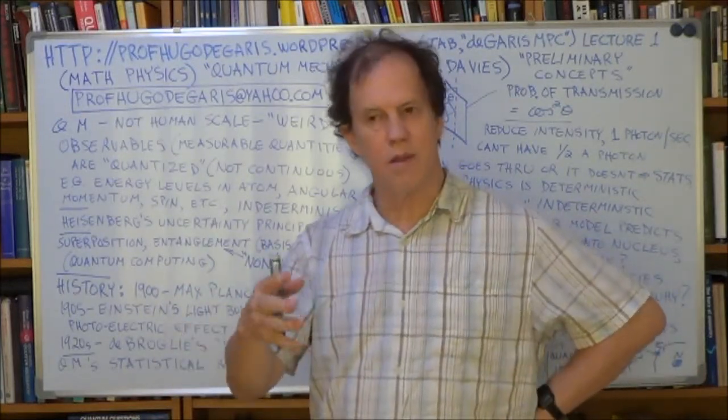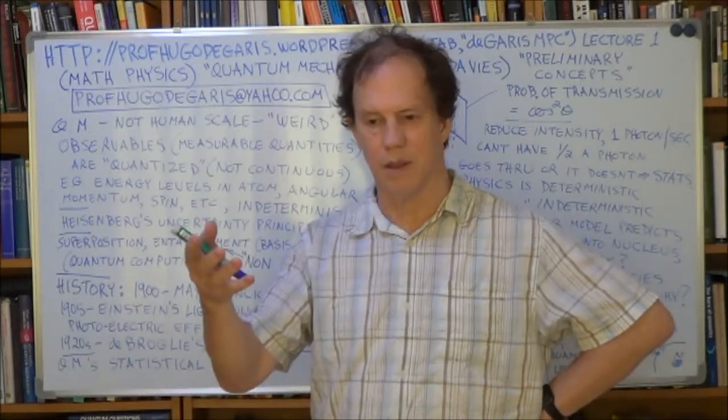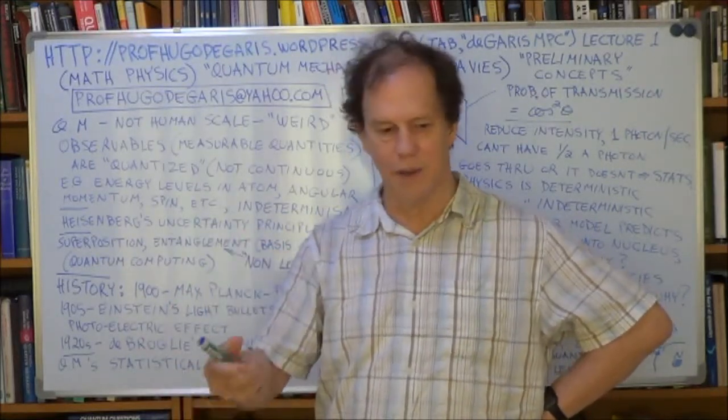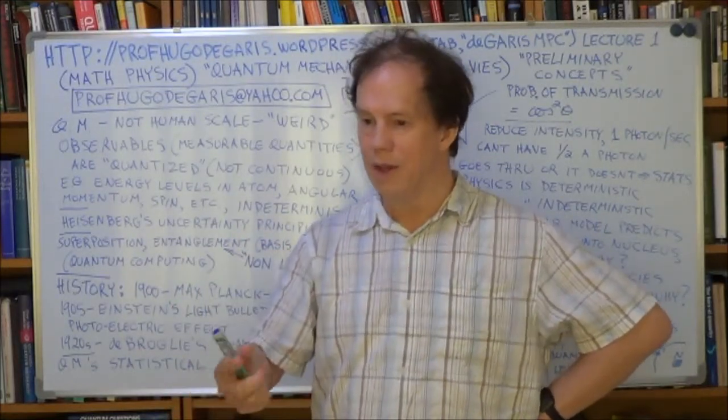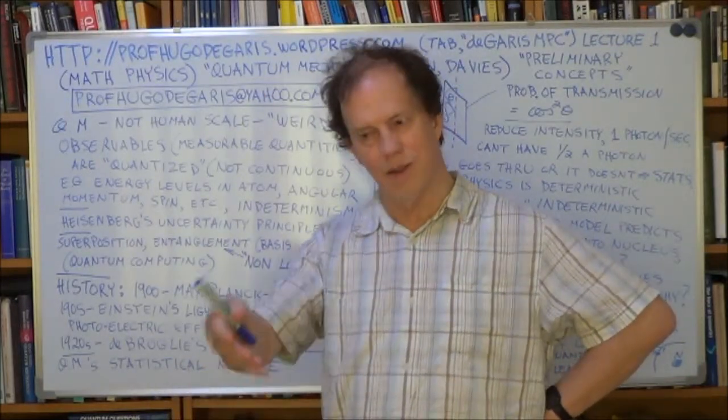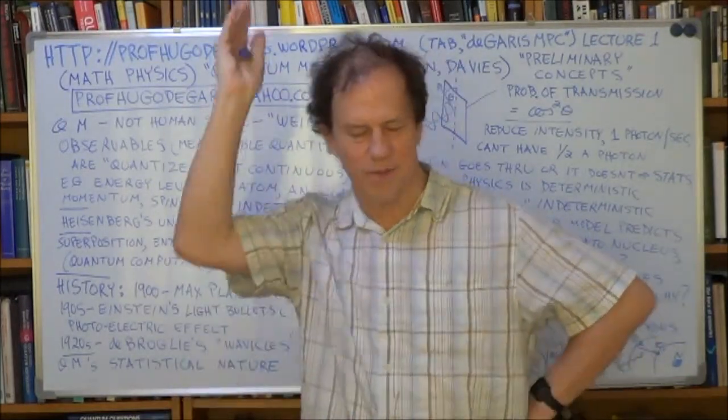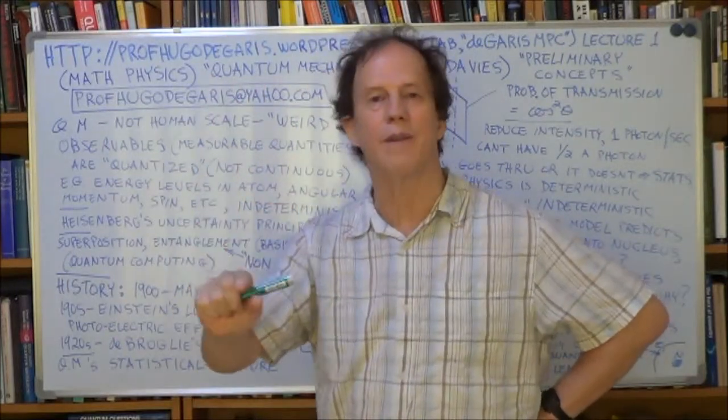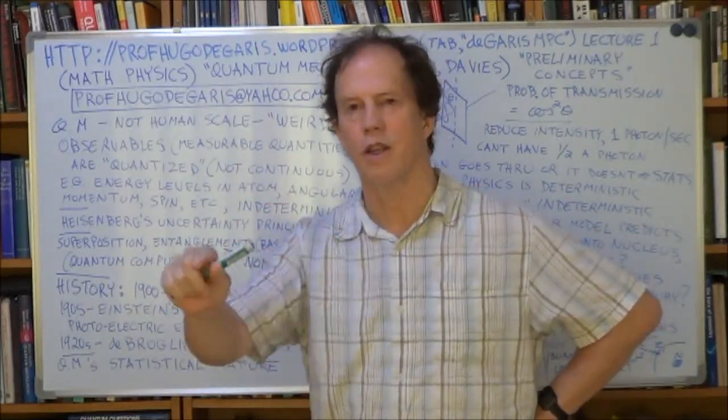Now, anything ending in O-N means a particle of some kind, like a neutron, proton, electron, nucleon, meson, boson, fermion, graviton, you know, many, they all just mean particle, some kind of particle, O-N.